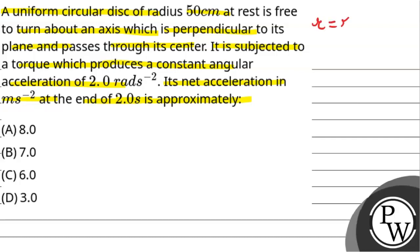So let's say r is equal to 50 cm. It is free to rotate at rest, passes through perpendicular to its axis of plane and subjected to torque produced at constant angular acceleration alpha equal to 2.0 radians per second square. Net acceleration in meter per second square at the end of 2.0 seconds, so time t is equal to 2 seconds.